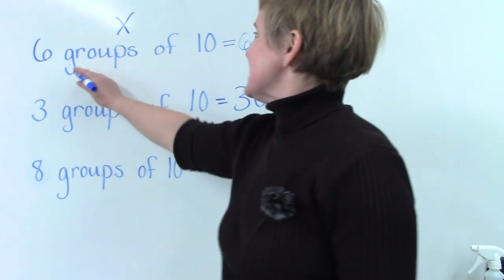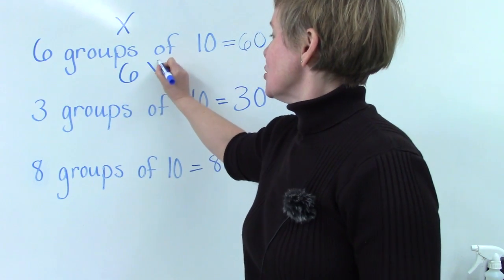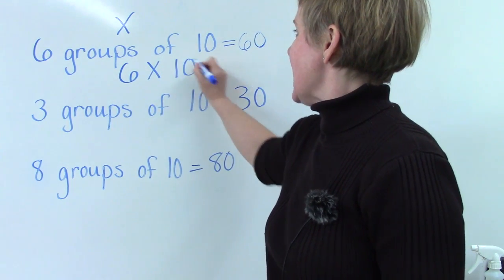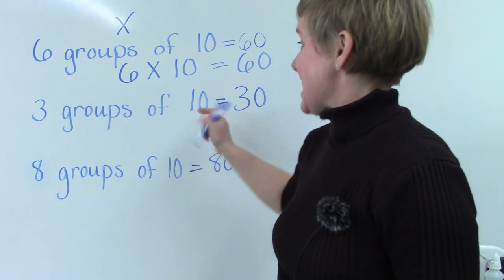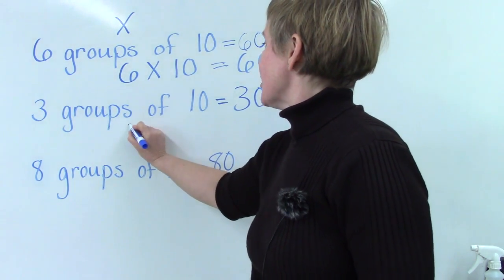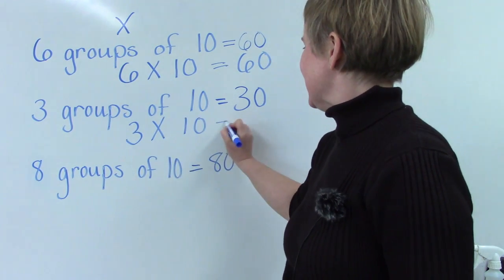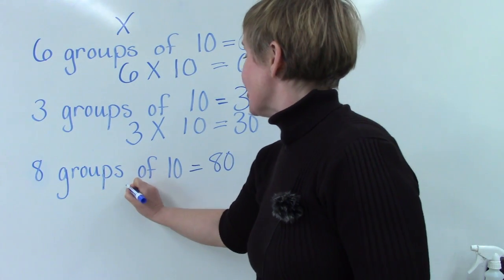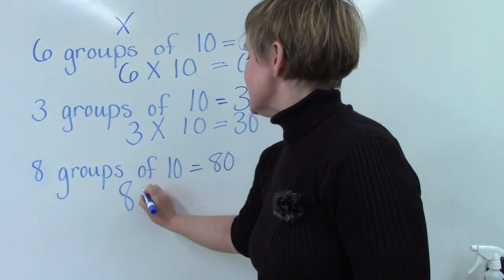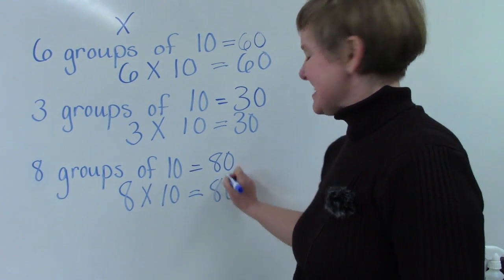For instance, six groups of 10 can be written six groups of 10 equals 60. Three groups of 10 can be written this way. Three groups of 10 equals 30. And we can also write eight groups of 10 equals 80.